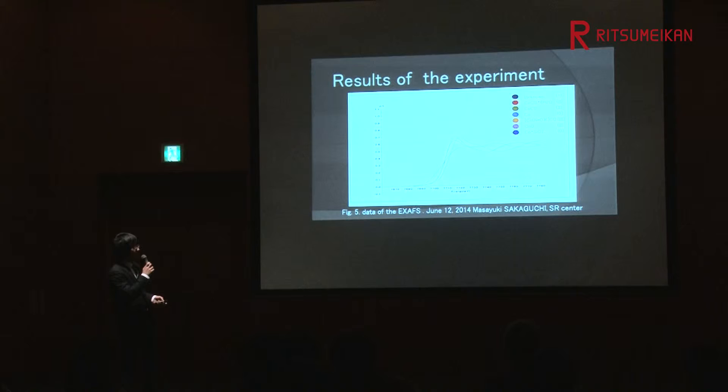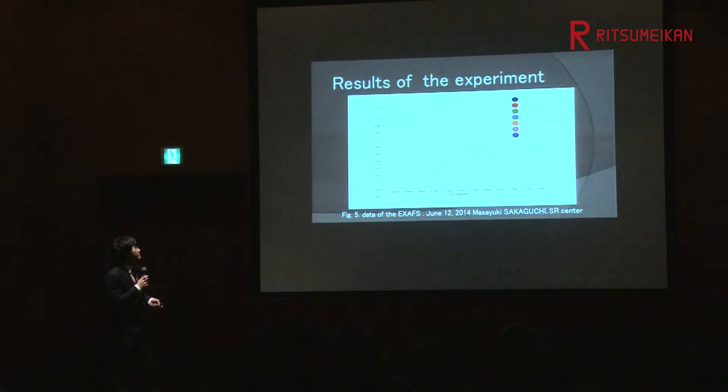Now I am going to explain the results of the experiment. This is the graph of the experiment. The oxidation state 2 existed here, and the oxidation state 3 existed here, and the unknown cobalt complexes existed between 2 and 3.